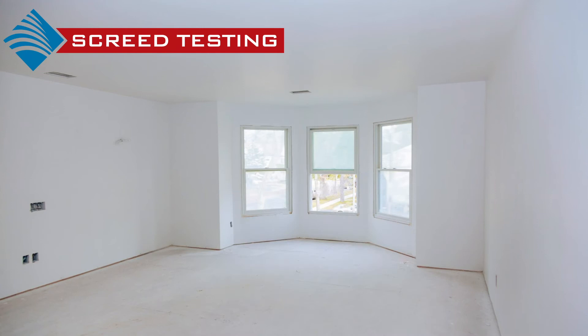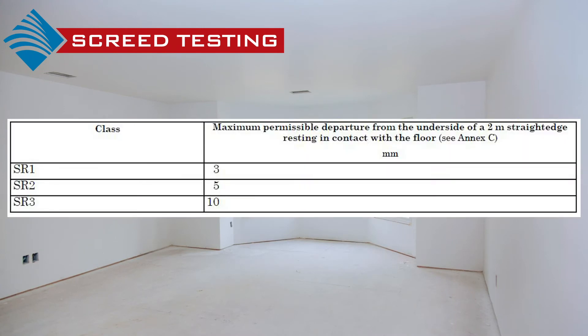The testing frequency should be agreed upon by the parties concerned. Surface regularity falls into three classes as shown in this table: SR1 which is 3mm over a 2m straight edge, SR2 is 5mm, and SR3 is 10mm.